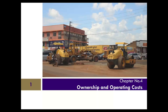Last time we talked about the time value of money—how to convert sums you'll spend or receive in the future to a present value, and then how to take that present value and turn it into an annualized cost. We're now going to employ that tool in the context of heavy equipment such as a sheep's foot, a smooth roller, and motor graders. To get them onto a working site, you need to understand how much it's going to cost so you can estimate jobs properly.